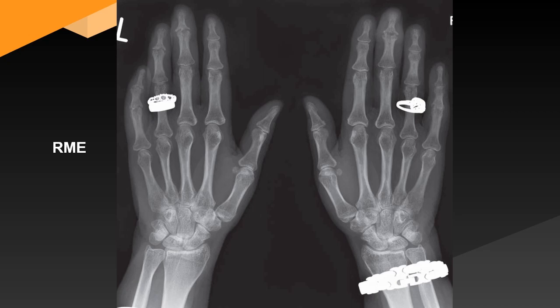The metacarpophalangeal joints and wrist joints appear normal, and the bone density is normal. I cannot see any resorption of the terminal tufts of the phalanges or any soft tissue calcification. There is marked soft tissue swelling around the right middle finger DIP joint. The patient has not removed their jewelry, and it is possible that pain and swelling prevented them from doing so.